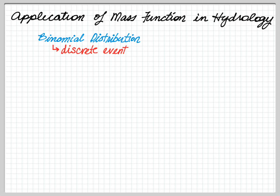A binomial distribution will either happen or not happen. It's one or the other. It's also an application of a mass function.